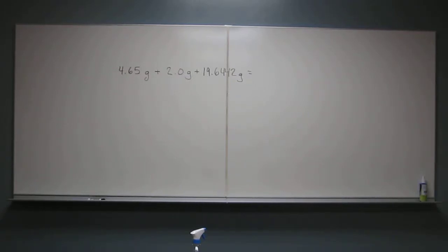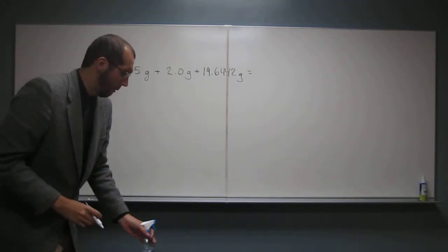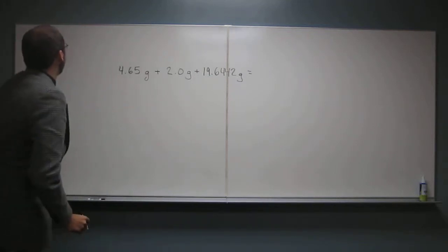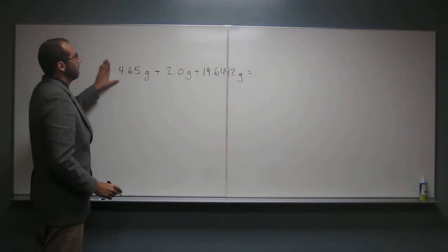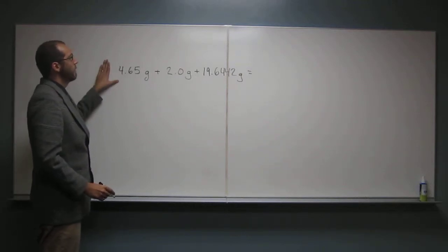So the next question says select the answer with the correct number of decimal places for the following sum. When we look at these types of problems, sometimes it's hard to kind of realize how I'm supposed to do this.